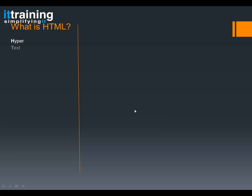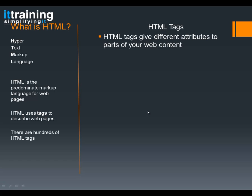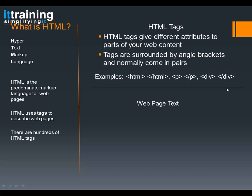So what is HTML? HTML stands for Hypertext Markup Language — basically it is a language that your computer can read so it can display a web page. HTML is the predominant markup language for web pages, and we use tags to describe web pages and parts of web pages. There are hundreds of HTML tags and you'll learn them as you go. HTML tags give different attributes to different parts of your web content, and they are surrounded by angle brackets. Some examples of real tags: the HTML tag, the P tag which stands for paragraph, and the div tag which divides things up.